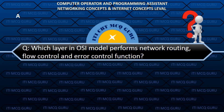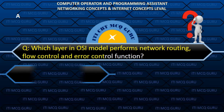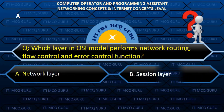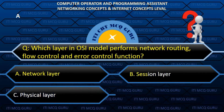Which layer in OSI model performs network routing, flow control and error control function? A. Network layer.